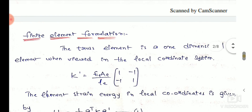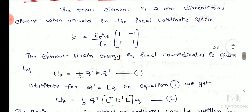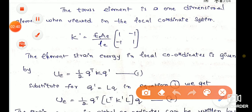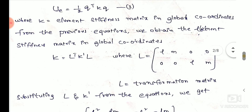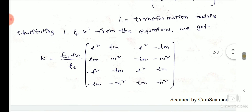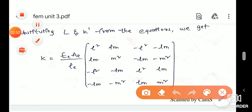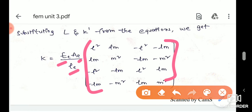L_e — from finite element formulation — the stiffness matrix is capital E times capital A divided by L_e, where small e denotes the element, times the matrix [1, -1; -1, 1] for the one-dimensional problem. For the truss element, the stiffness formula is: K = (E × A / L_e) times the matrix [l², lm, -l², -lm; lm, m², -lm, -m²; -l², -lm, l², lm; -lm, -m², lm, m²].